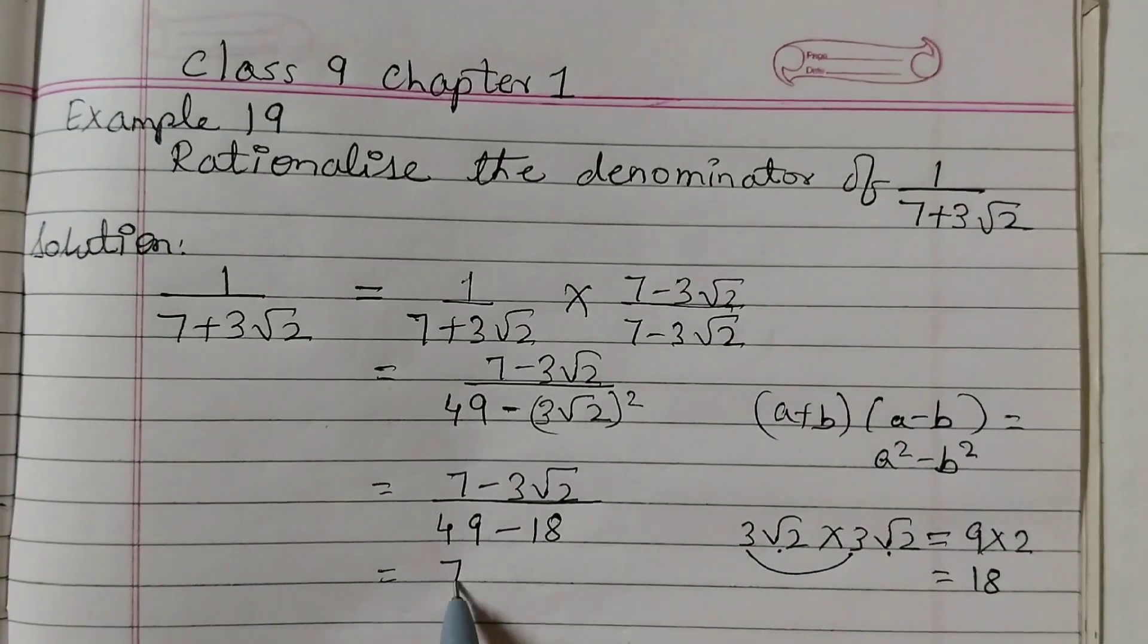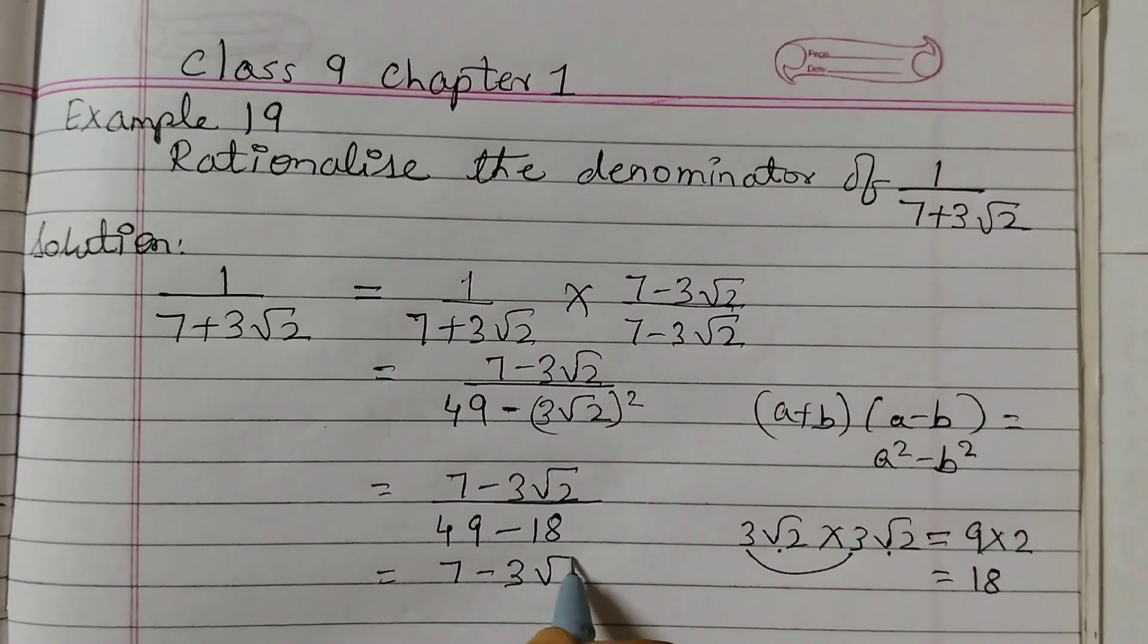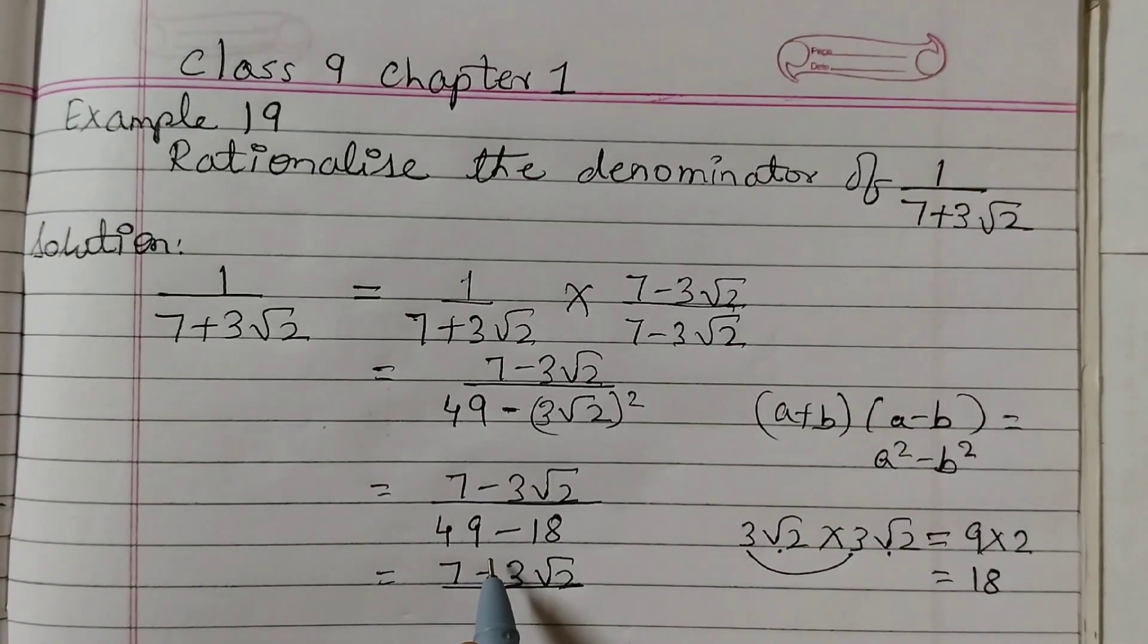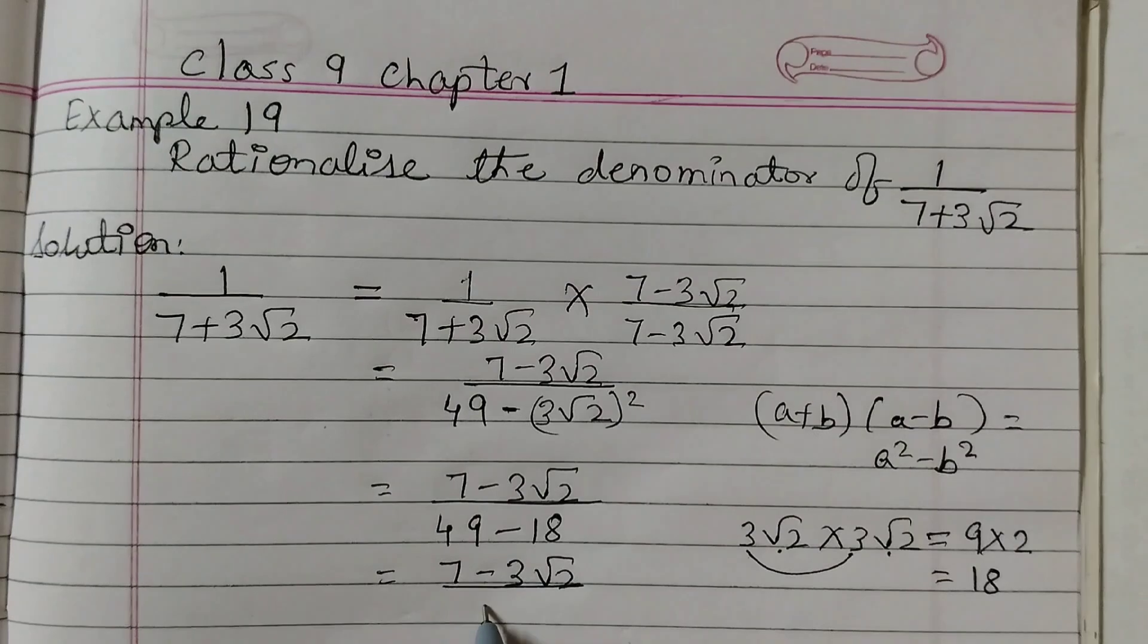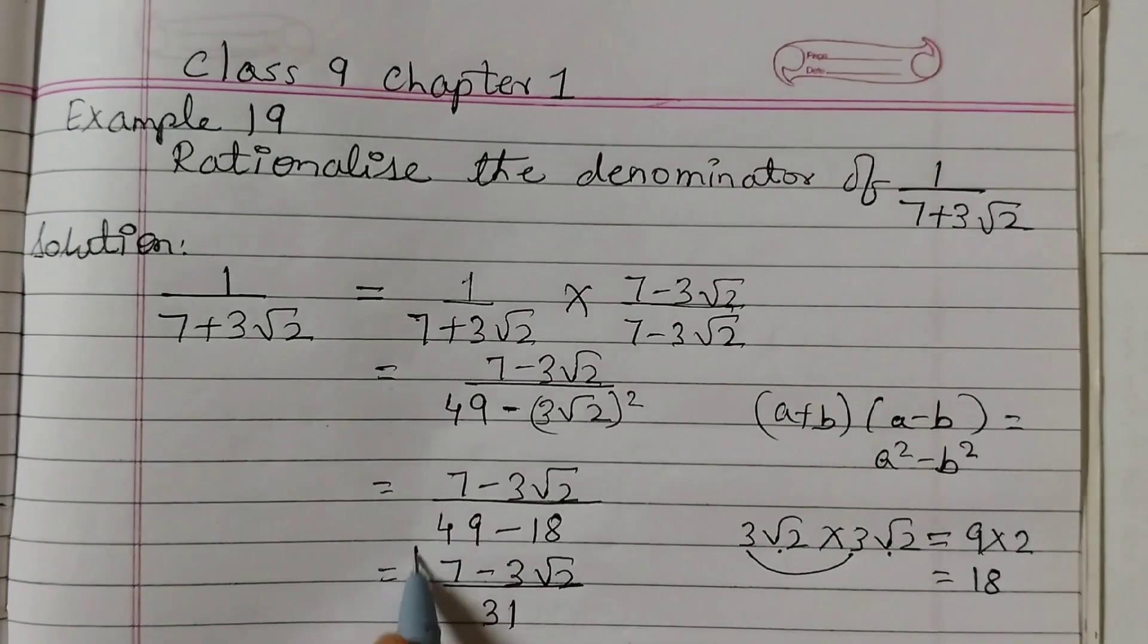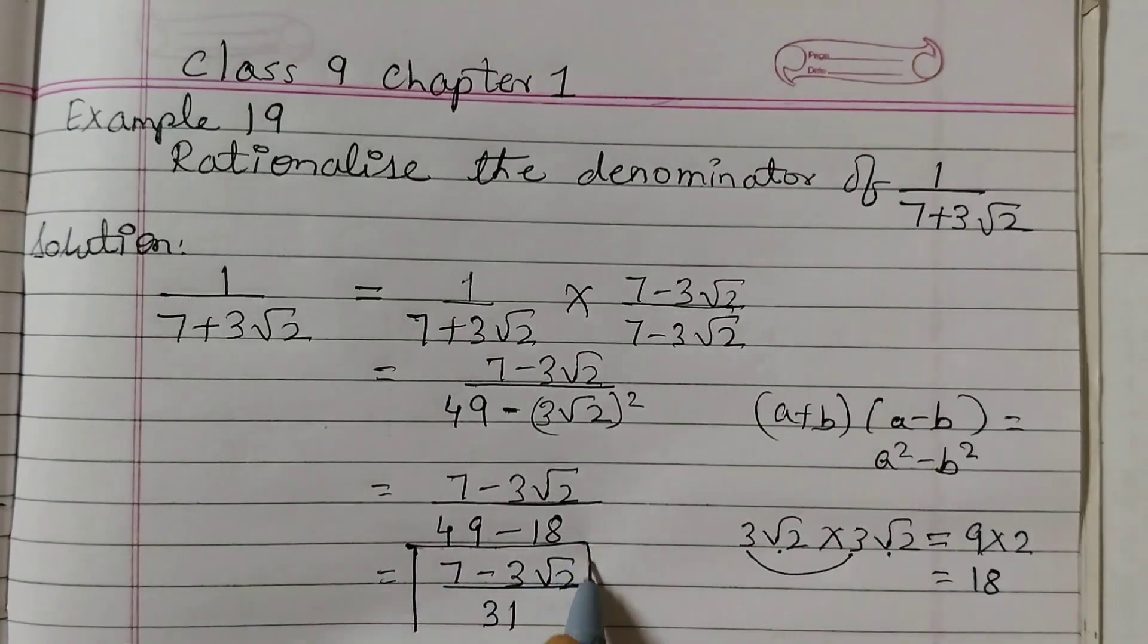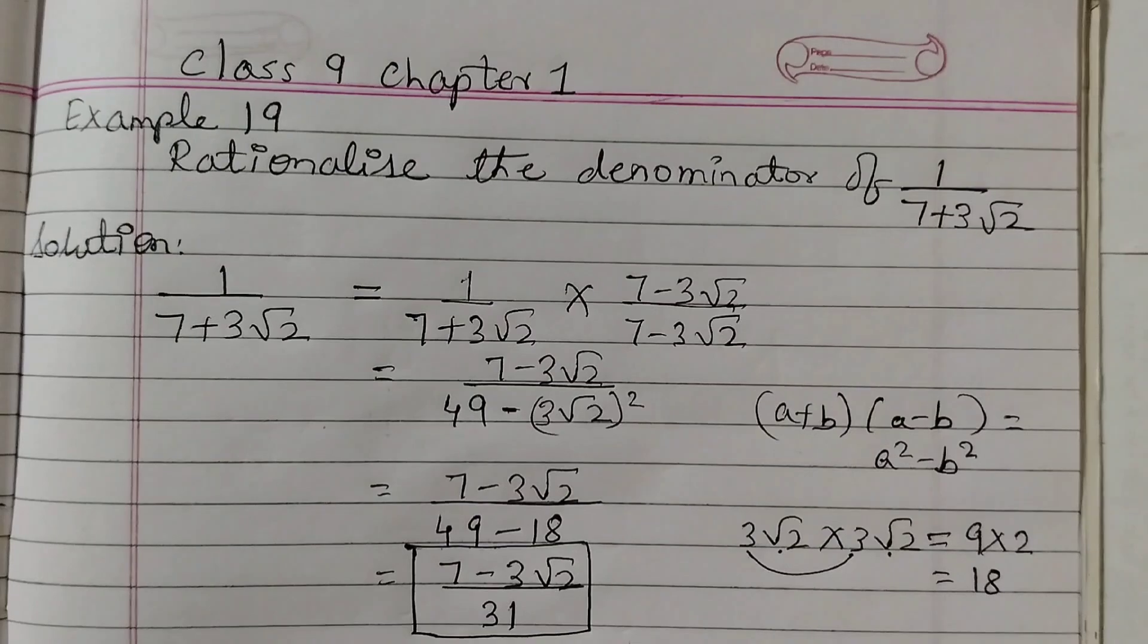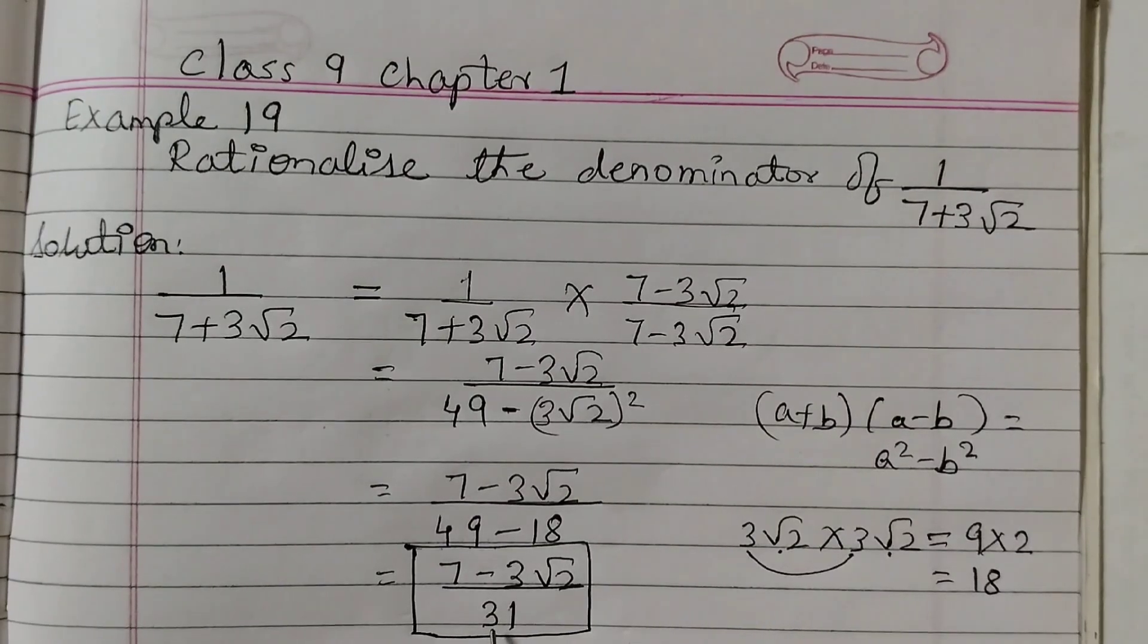So 7 minus 3 root 2, 49 minus 18 is 31. And this is our final answer as we have got the denominator as a rational number 31.